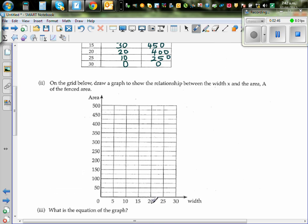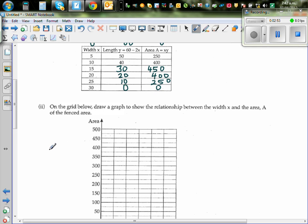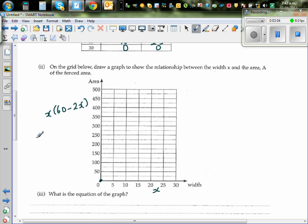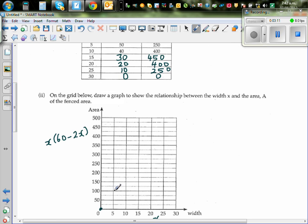This is your width x, and this is your area on the y-axis, which is x times 60 minus 2x. When x is 0, your area is 0. When x is 5, it is 250. For 10, it is 400. For 15, it is 450. For 20, it is 400. For 25, it is 250. And for 30, it is 0. This is a parabolic curve.